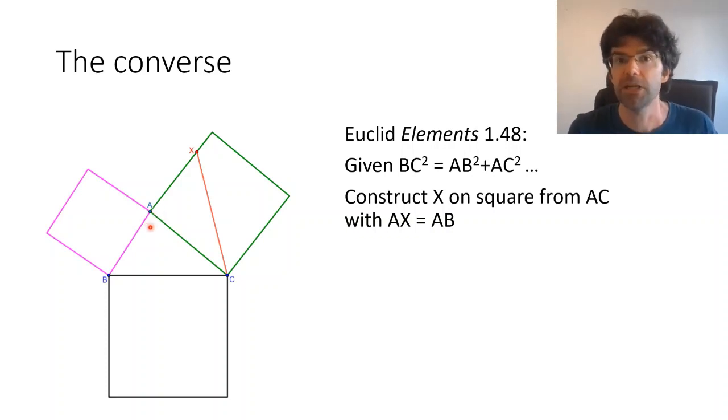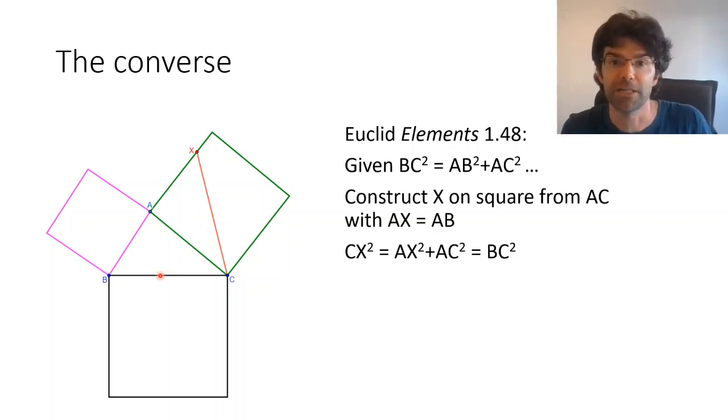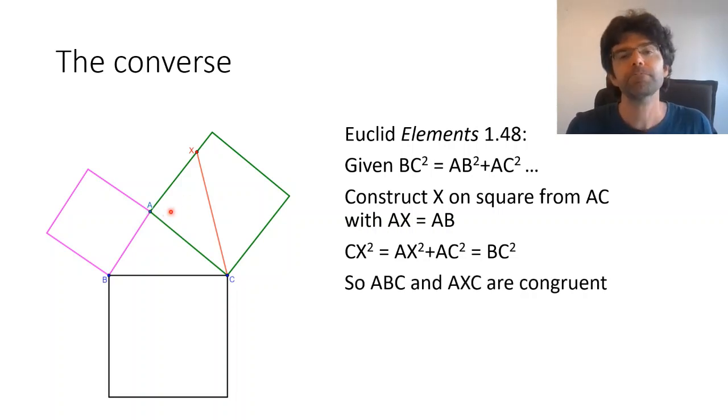They share the side AC. We've just said by design that AX is equal to AB and more or less, we know that XC is equal to BC because we were told that AB squared plus AC squared equals BC squared. And we've got Pythagoras theorem to tell us that AB squared plus AC squared equals XC squared because it's right angle. But if the triangles are congruent, then they must both be right angled.